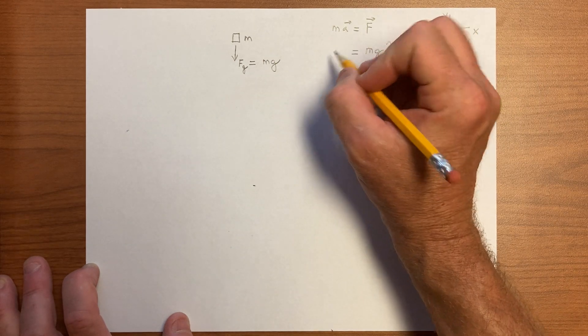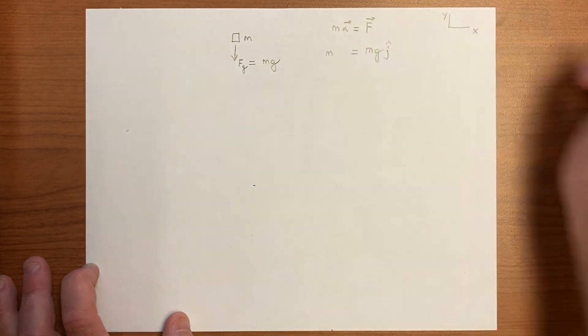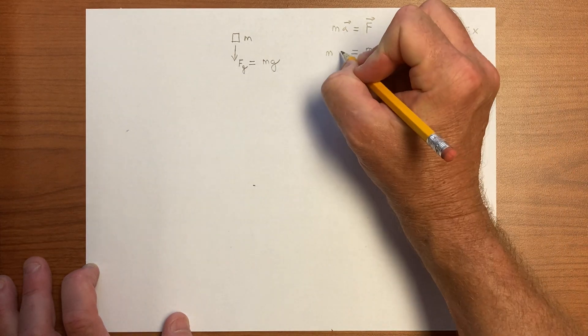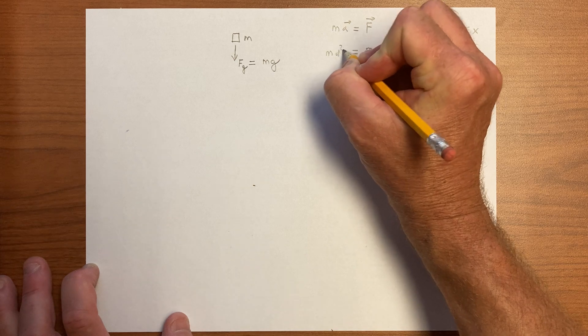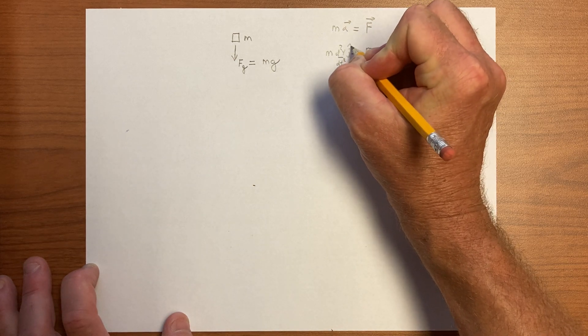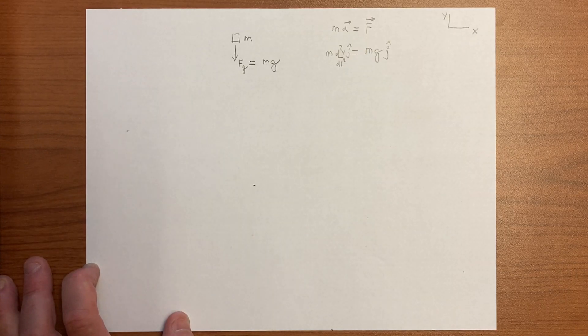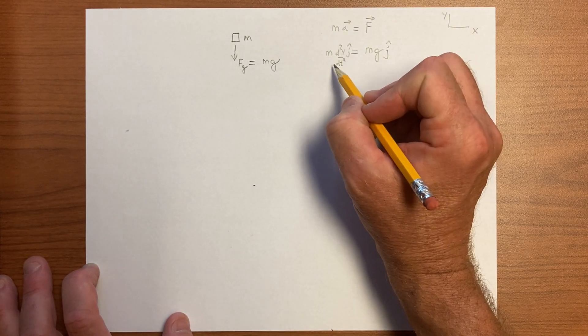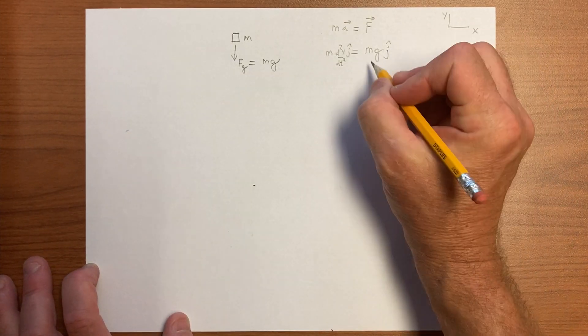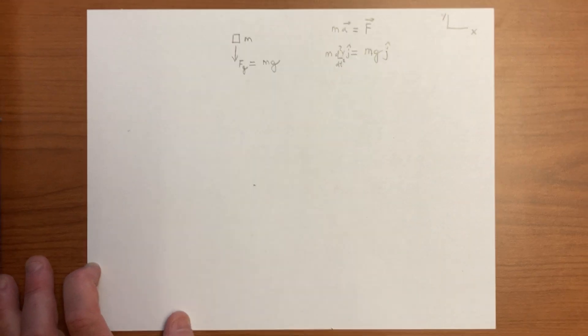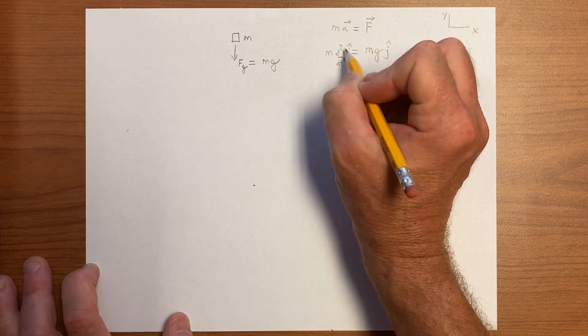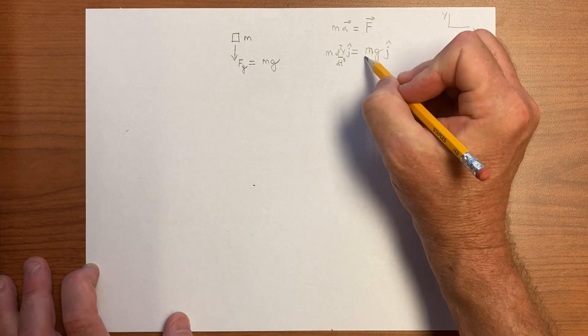And we would have an acceleration here, m times the second derivative of y with respect to t. So there's an acceleration in the y, and so the ma equals f would look something like this. We have this strange coincidence that the mass that appears on the left-hand side with the acceleration also appears on the side of the force.